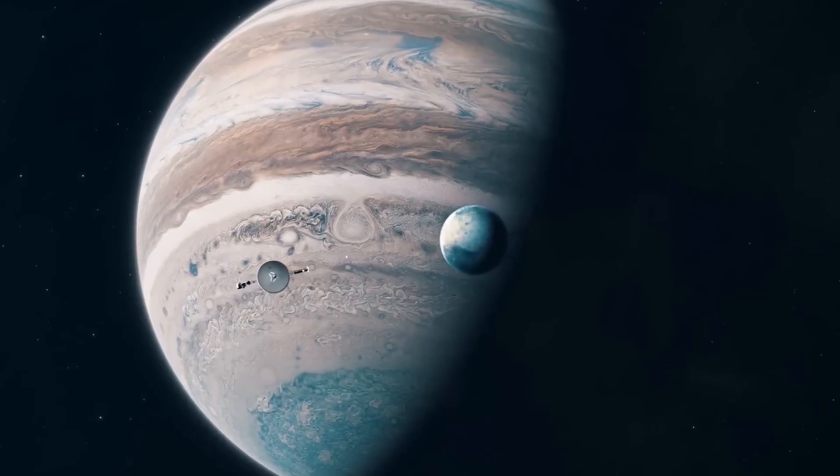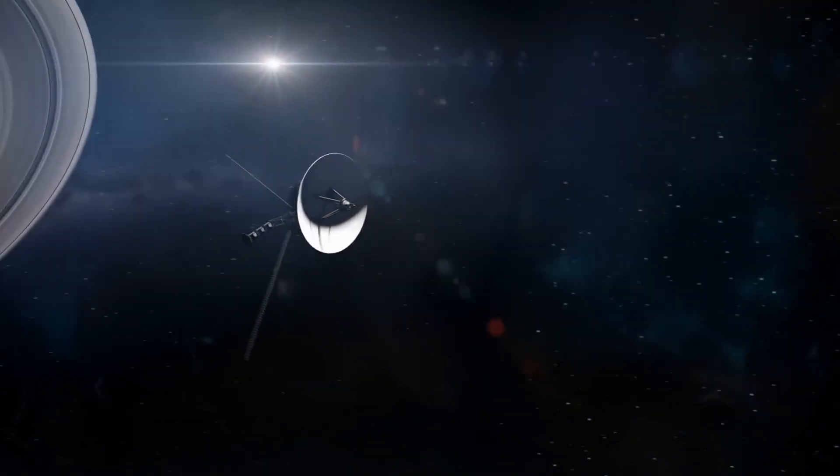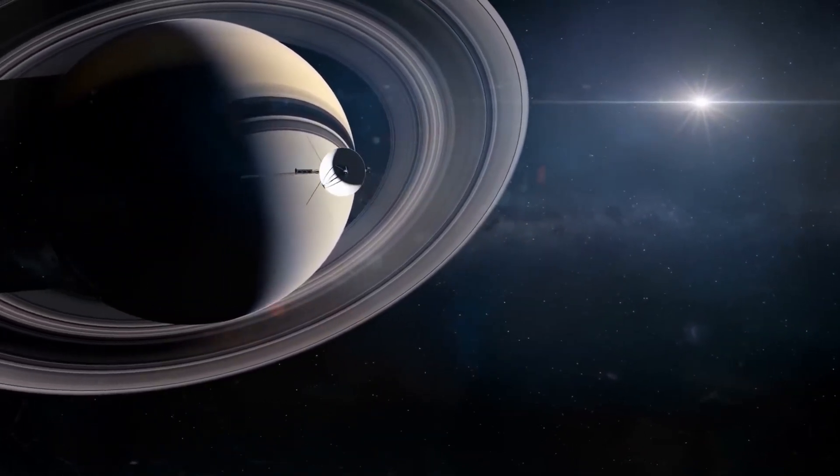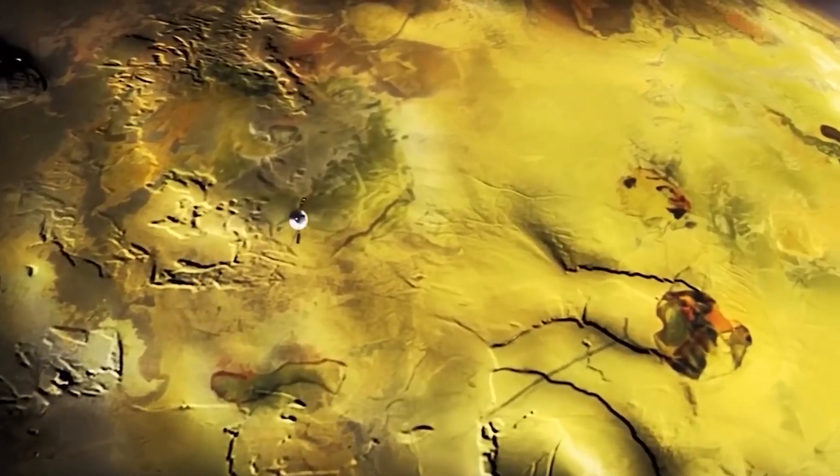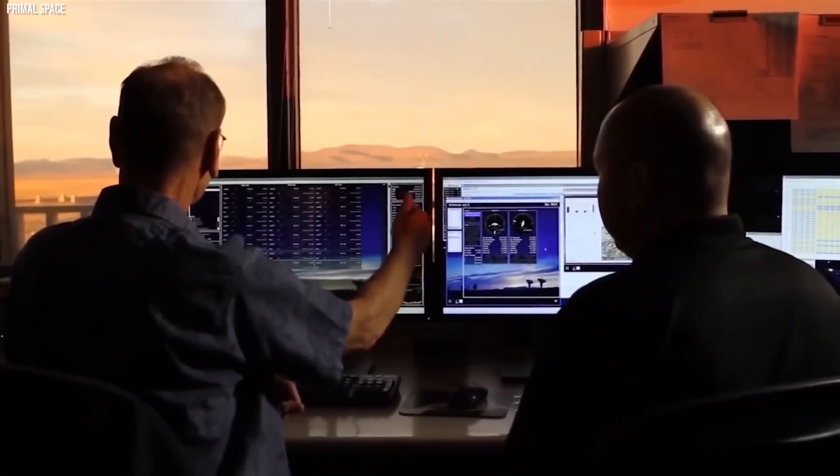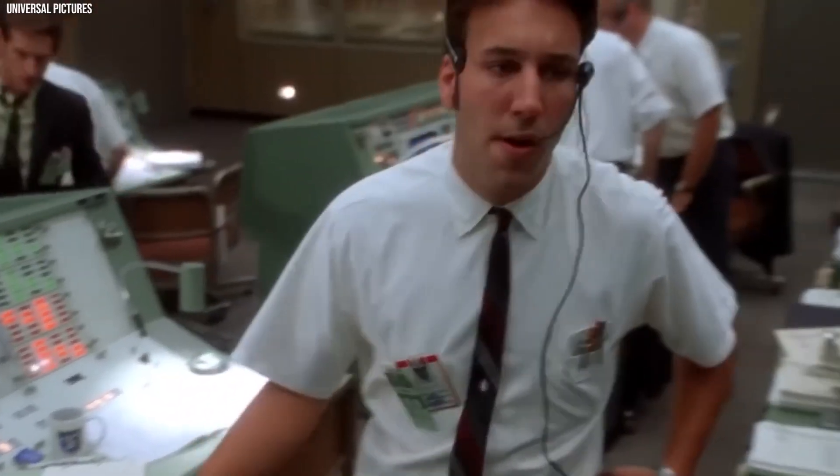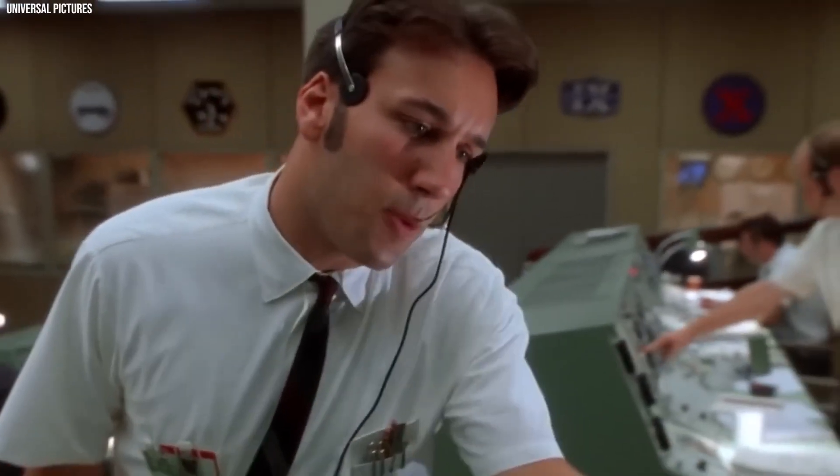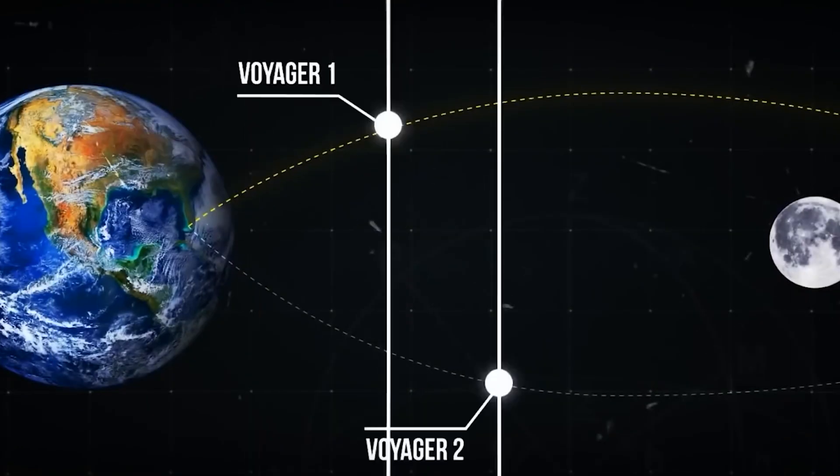However, there was a catch. This alignment occurred only once every 176 years. Faced with such an exceptional opportunity, NASA acted quickly, and just 15 days apart, they launched two identical spacecraft, Voyager 1 and Voyager 2.